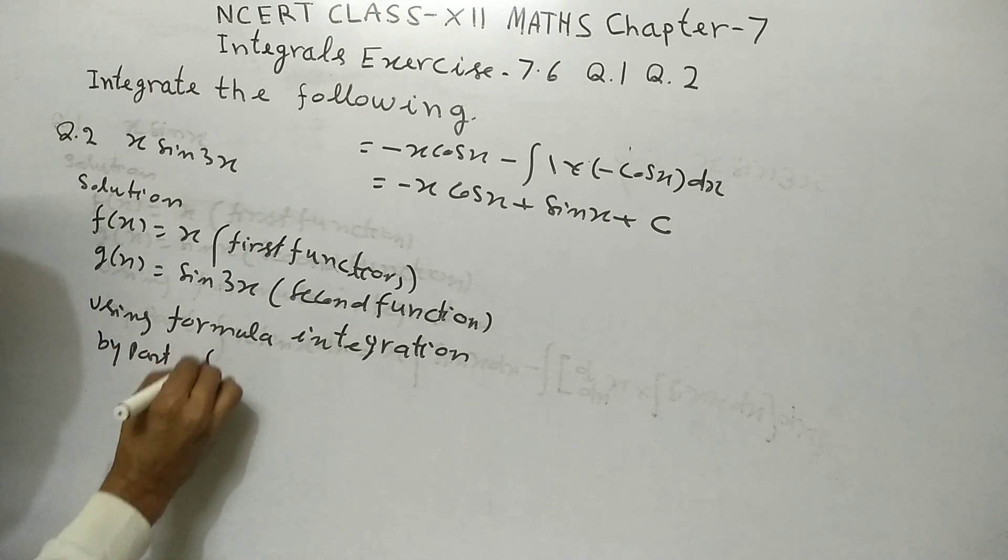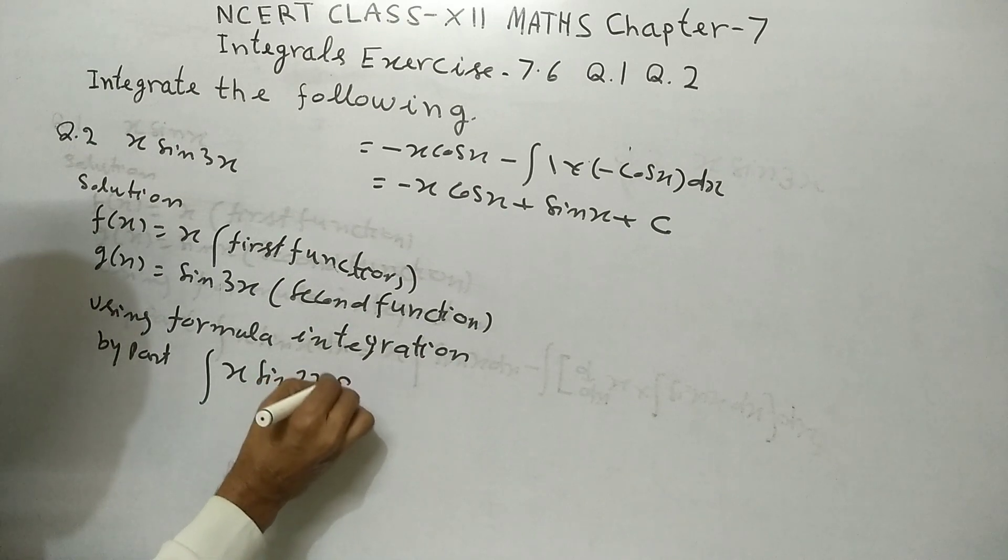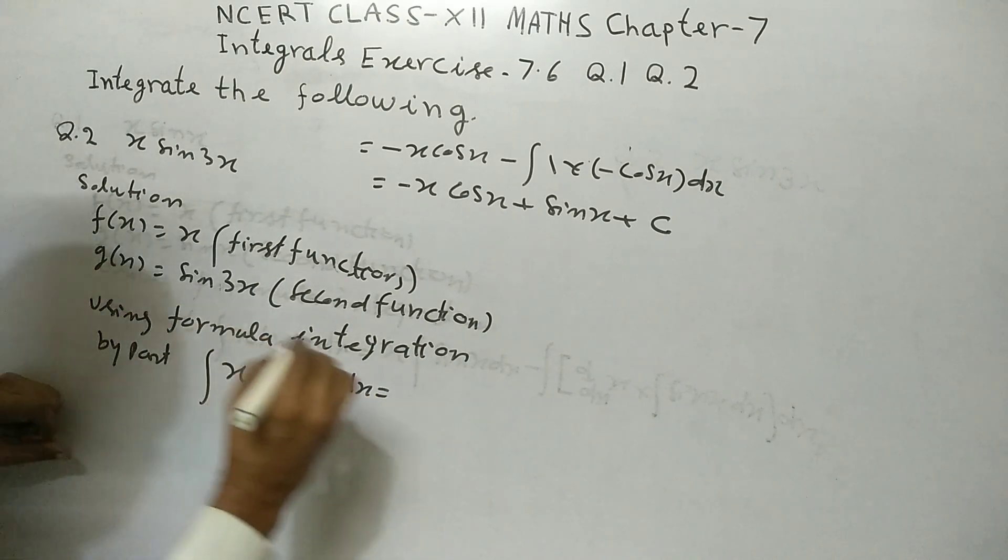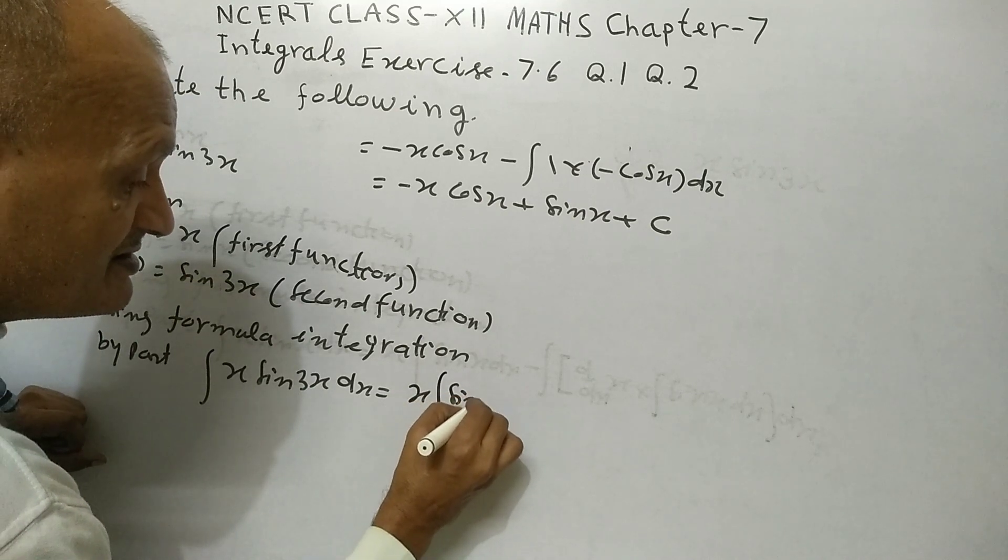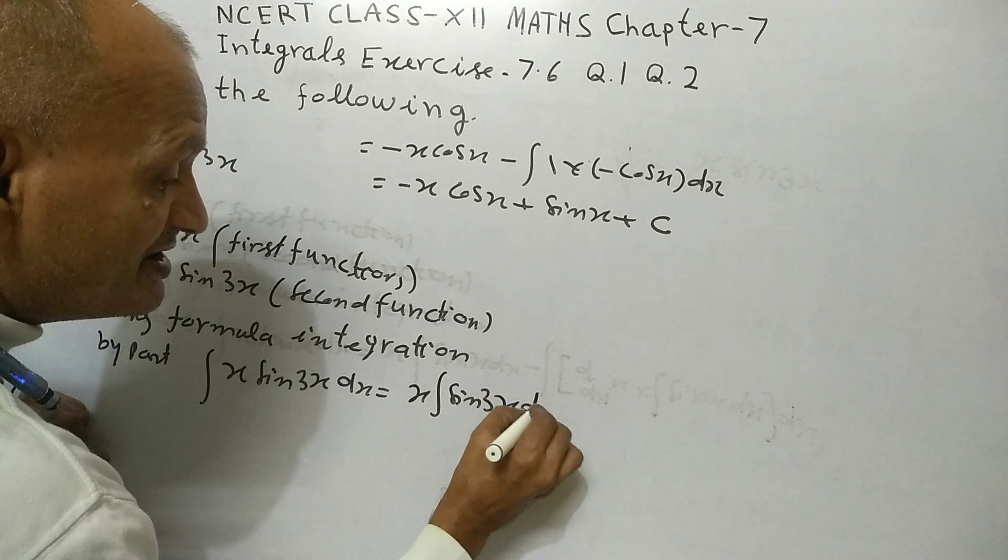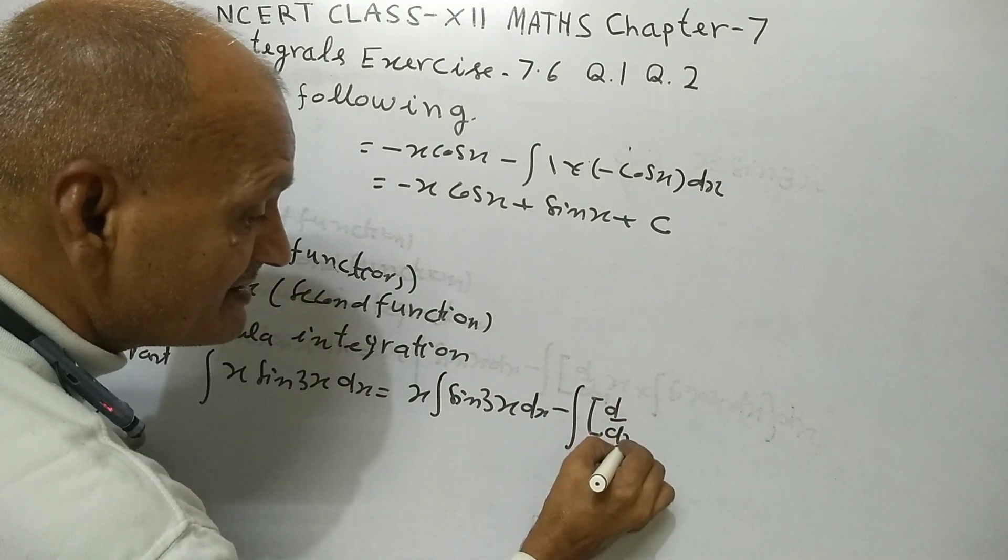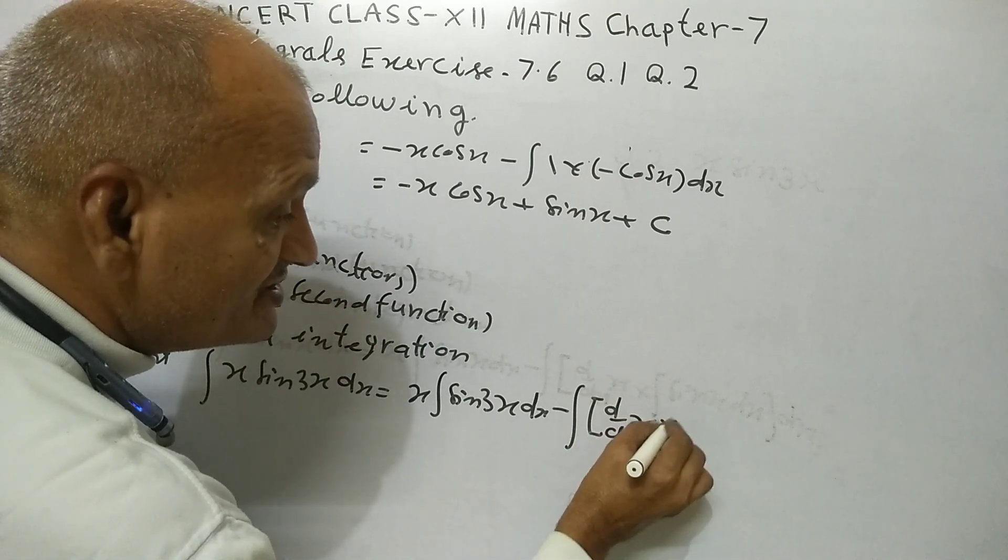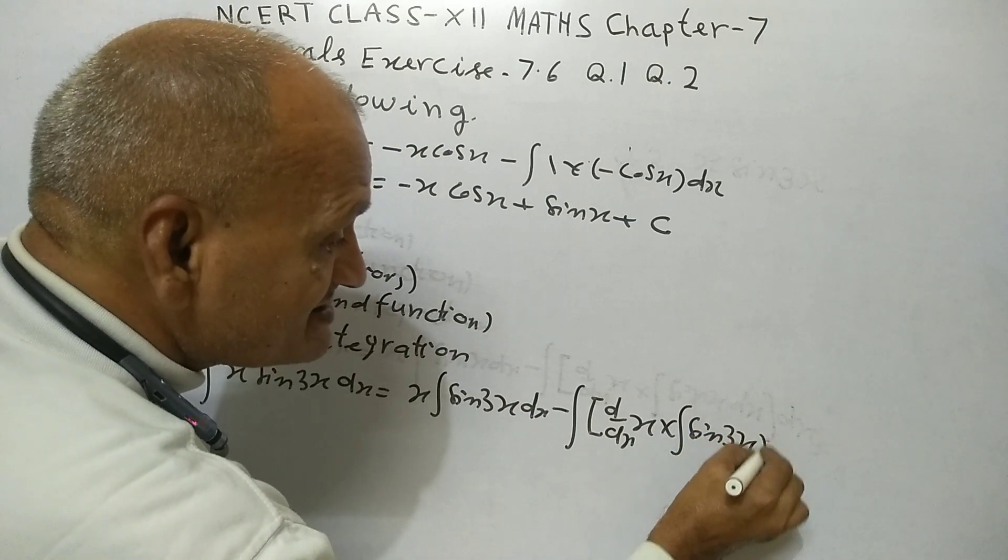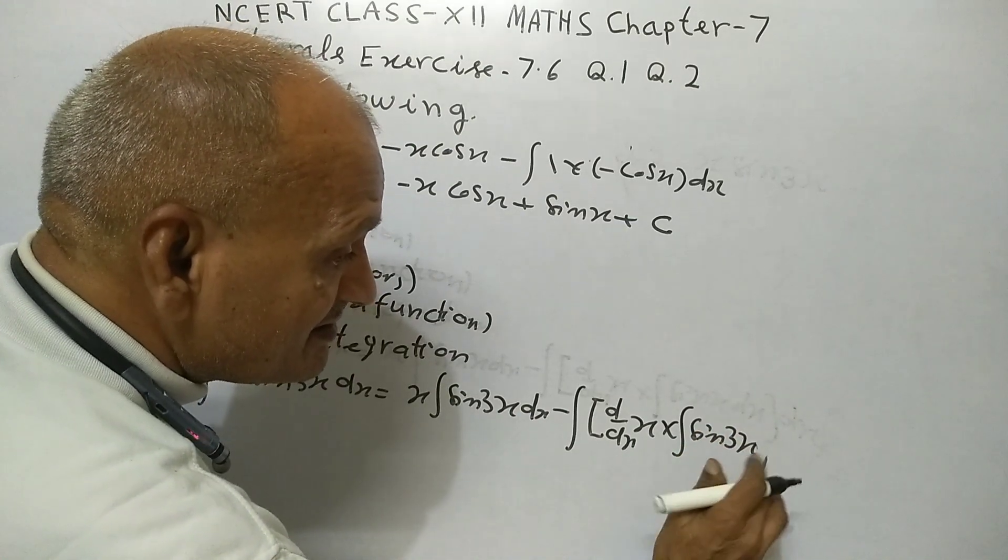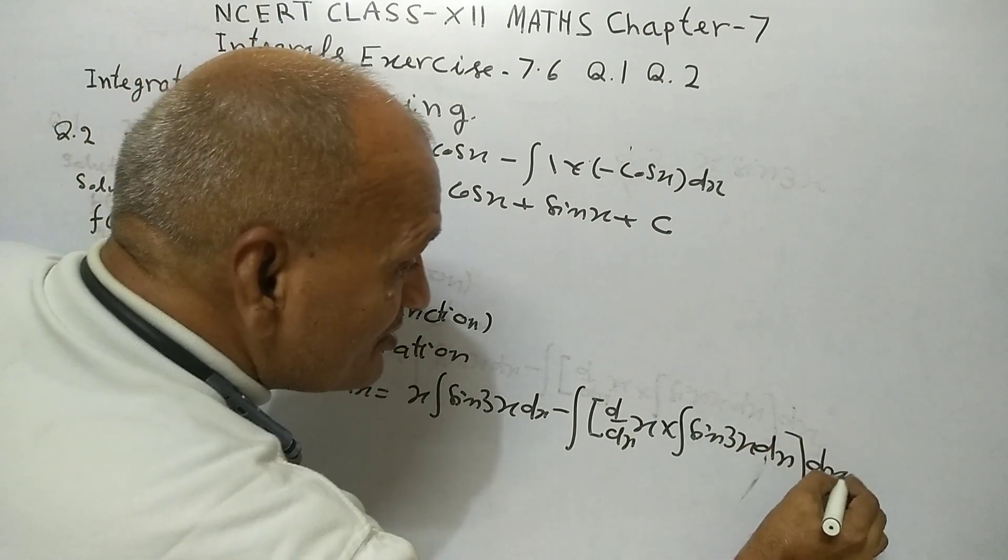So integration x sin 3x dx equal x integration sin 3x dx minus integration differentiation of x into integration sin 3x dx into dx.